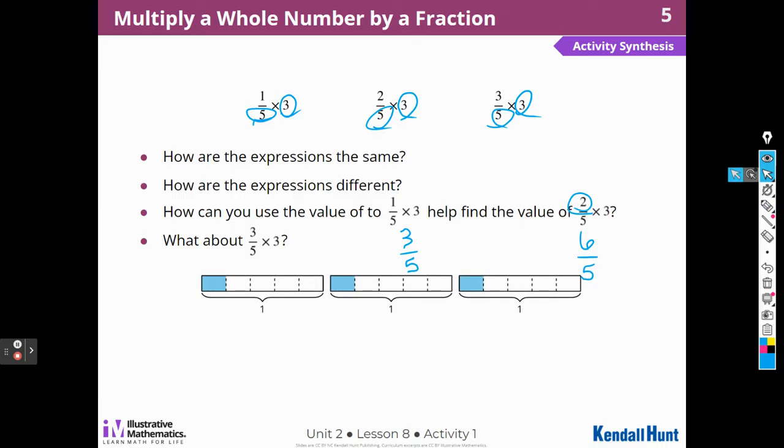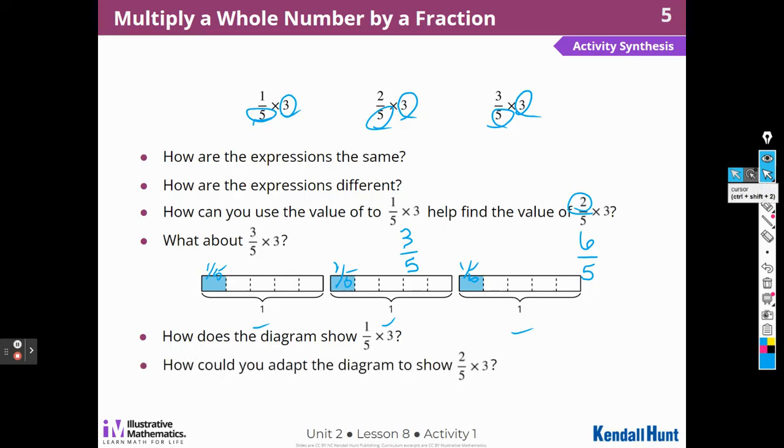So how can we use the value of one-fifth times 3 to help us find the value of two-fifths times 3? Well, we did discuss that in the first one, right? The answer to this one, three-fifths, this is going to be double that because it is double. Two-fifths is double one-fifth, so it's going to be double. What about three-fifths? Again, that's triple. Triple. All right. Here we have a diagram just like I drew. How does the diagram show one-fifth times 3? Well, I have three wholes, 1, 2, and 3, and I have shaded in one-fifth of each whole.